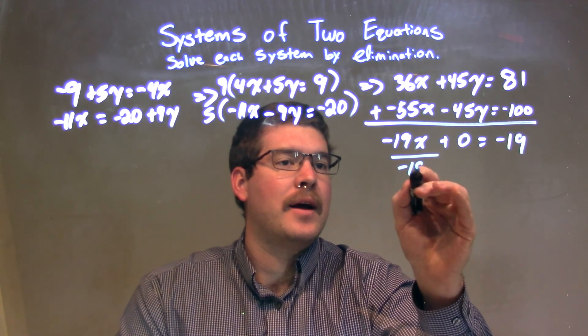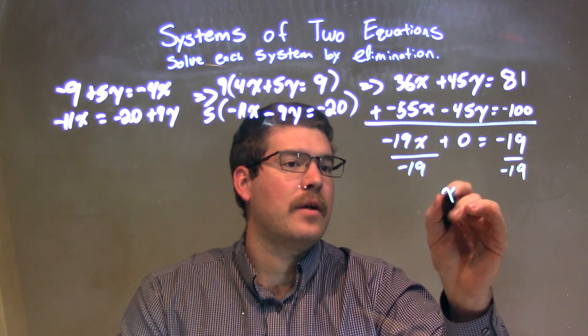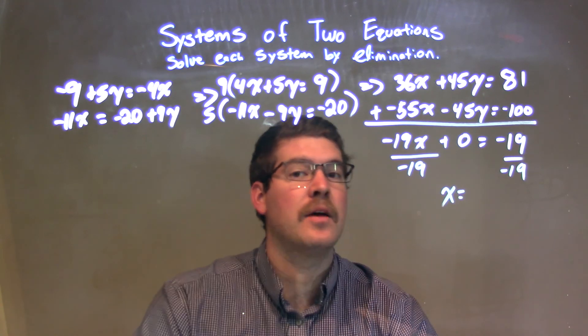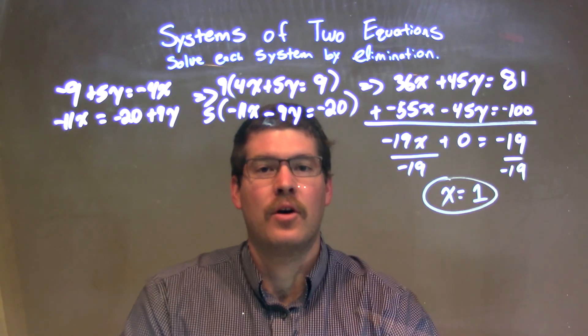To get x by itself, I'm going to divide by negative 19 on both sides. x equals negative 19 divided by negative 19, which is positive 1. So we have a positive 1 right there, and that is our x value.